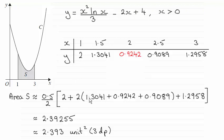Plus 2 times the sum of all the middle values, that's this one, plus this one, plus this one, and then it's always plus the last y value.